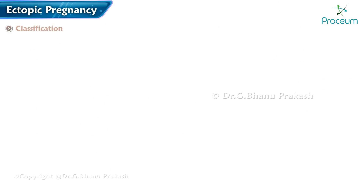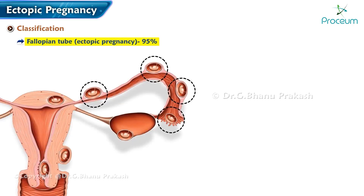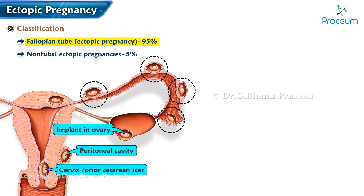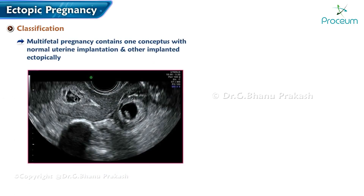Ectopic pregnancy classification: nearly 95 percent implant in the fallopian tubes at various segments. Non-tubal ectopic pregnancies compose the remaining five percent and implant in the ovary, peritoneal cavity, cervix, or prior cesarean scar.